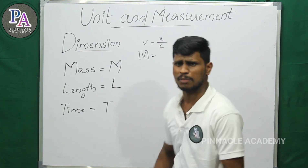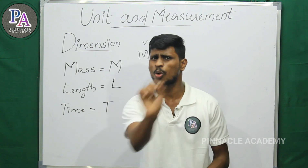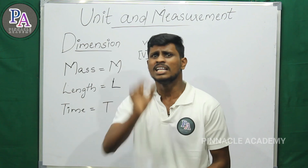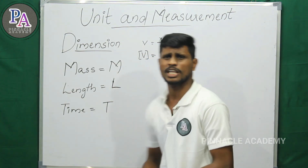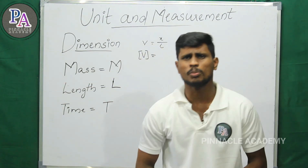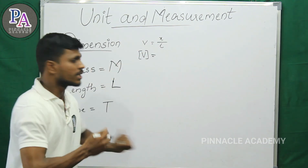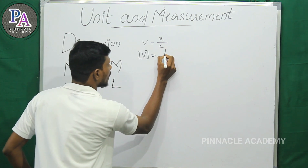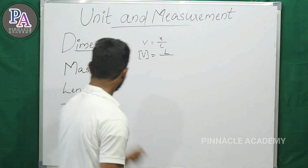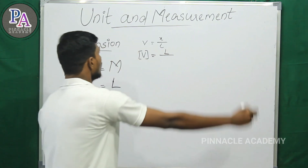Displacement by time — displacement is the shortest distance between the initial and the final position, so we call it length, represented by L. And time is represented by T. So the dimension of velocity is L divided by T.